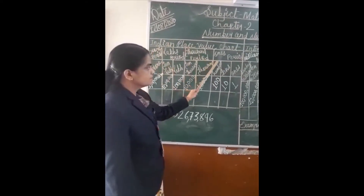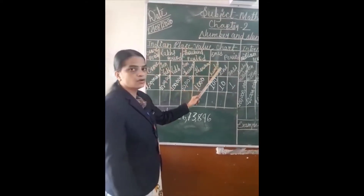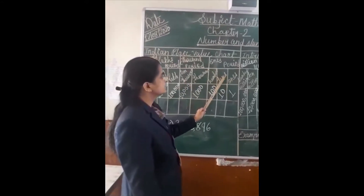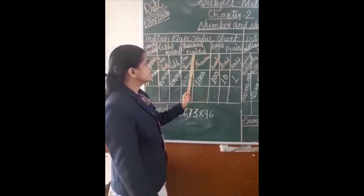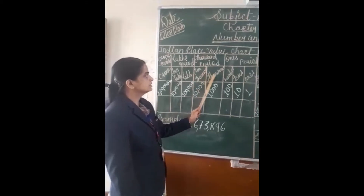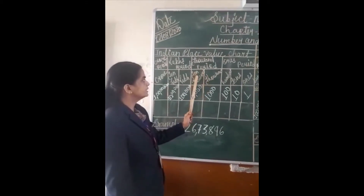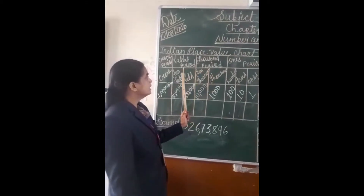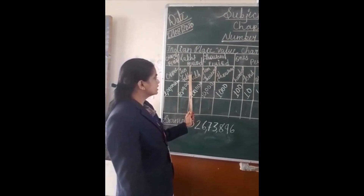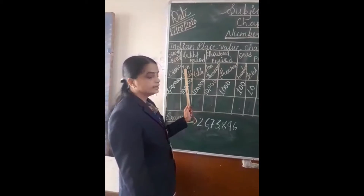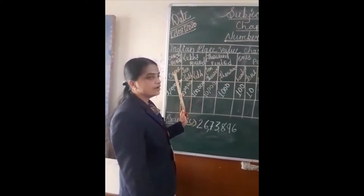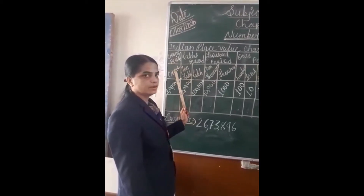In the ones period, three columns are there: ones, tens, and hundreds. In the thousands period, two columns are there: thousands and ten thousands. In the lakhs period, two columns again: lakhs and ten lakhs. And in crores, we have taken only one column.